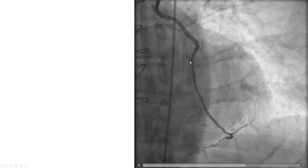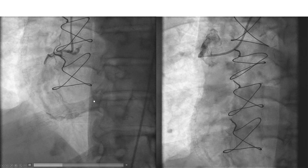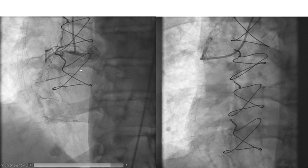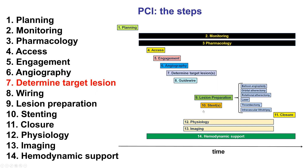The LIMA to LAD was patent with good flow, and the right coronary artery was occluded, as was the vein graft to the right coronary artery, bringing us to the question about what should be the target lesion. This patient had severe symptoms despite maximal medical therapy, so clearly revascularization was required. Coronary bypass for the second time is most of the time not a good option, especially when the LIMA is patent, as was the case in our patient.